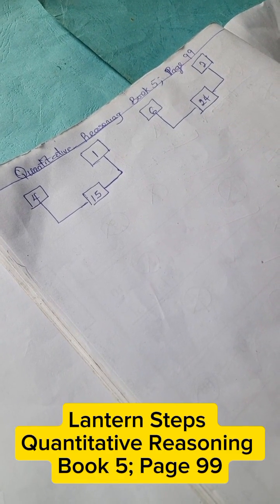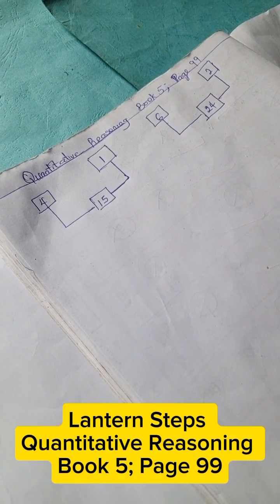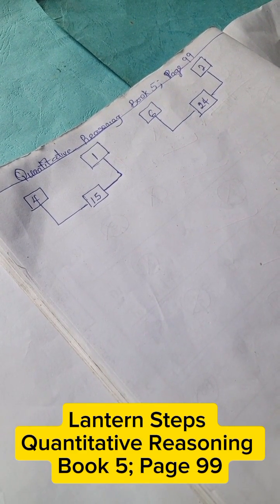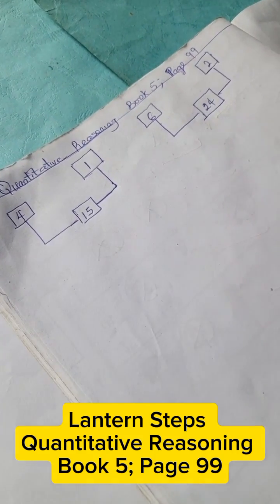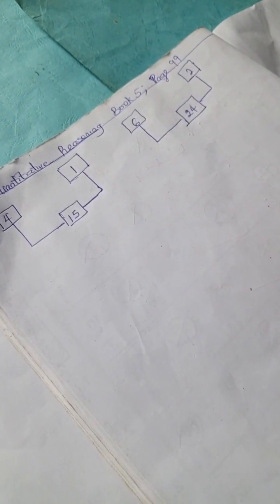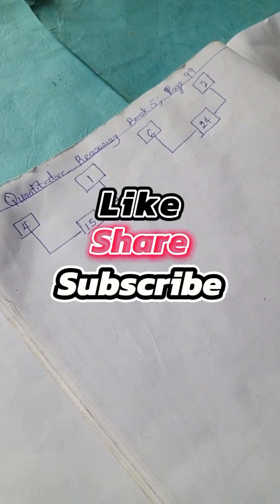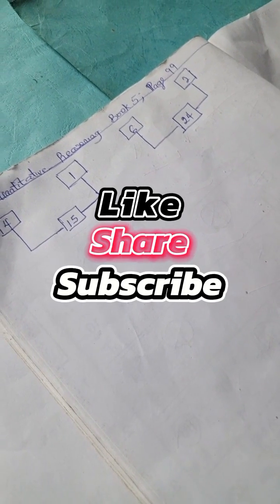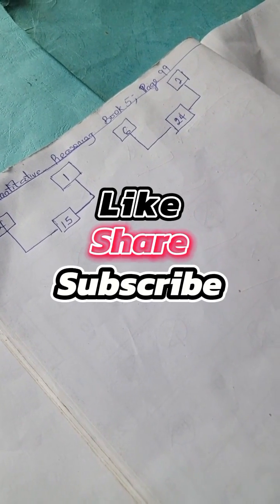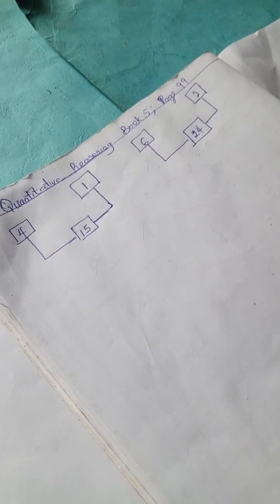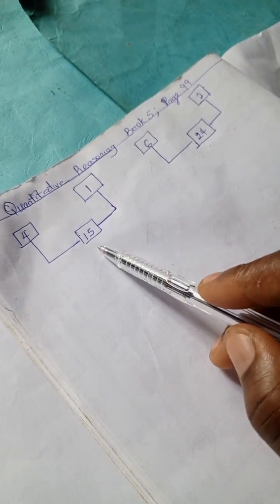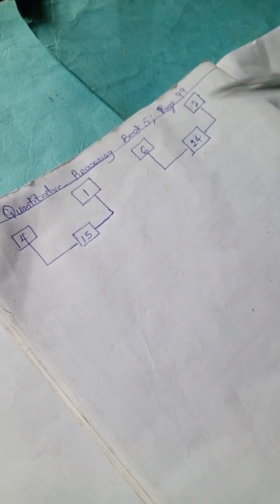Welcome to quantitative reasoning solution section. Today we have quantitative reasoning from Lantern Step book 5, page 99. If you're a new viewer, please kindly subscribe to this channel for more quantitative reasoning solutions and problems. We have this problem before us: we have 4, 15, 1, and in this example we have 6, 24, and 2.